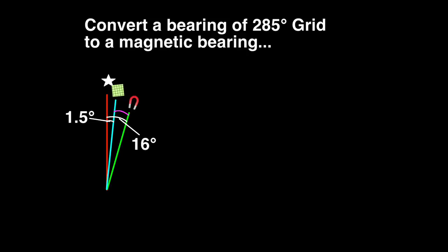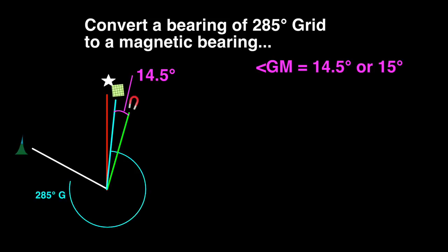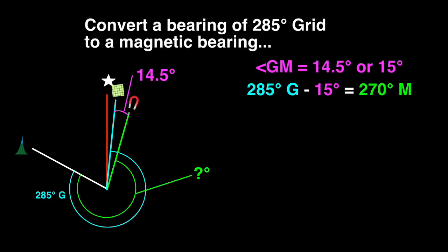The angle between grid north and magnetic north is the 16 degrees from magnetic to true, less the 1.5 degrees from true to grid, or 14.5 degrees. Let's round that up to 15 degrees. Now draw the 285 degree grid bearing onto the diagram. Start at grid north and go in a clockwise direction. The magnetic bearing we are seeking is smaller than the grid bearing we were given, so we subtract 15 degrees from the 285 degrees grid value to get the answer of 270 degrees magnetic.